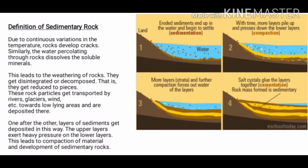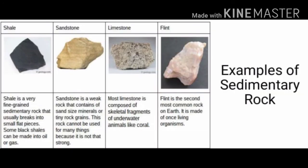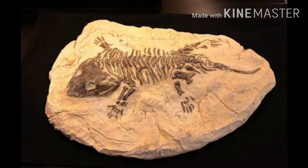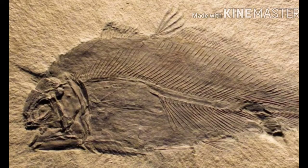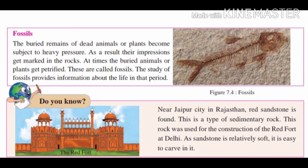One can easily see layers in sedimentary rocks. While layers are getting deposited, the remains of dead animals or plants get buried in these layers at times — therefore one may find fossils in sedimentary rocks. Sedimentary rocks are generally brittle and lightweight, and most of them are porous, meaning they float on water. Examples of sedimentary rocks include sandstone, limestone, shale, and corals. Observe these few diagrams on the screen — these fossils have been buried because of heavy pressure.